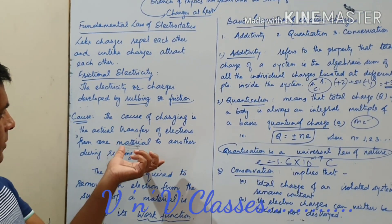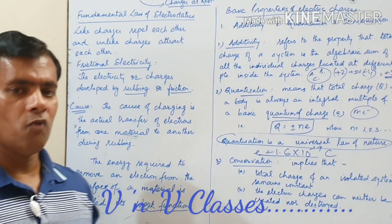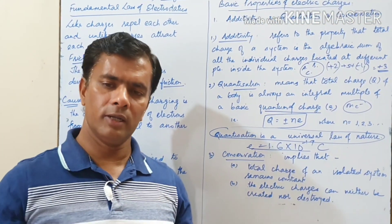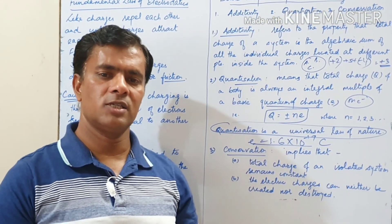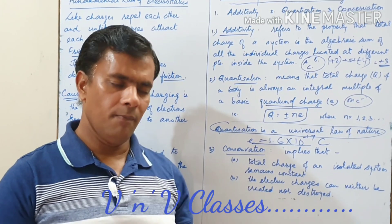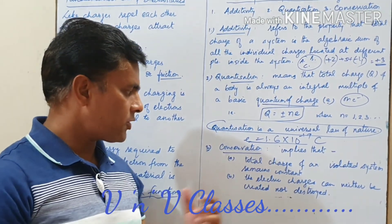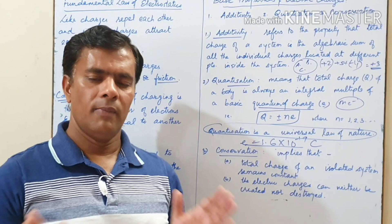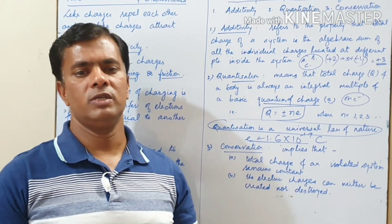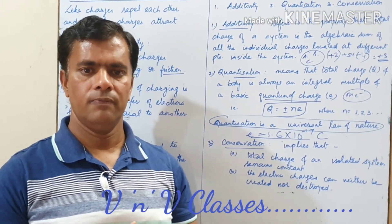We just came to know through the rubbing we can transfer the charge from one body to another. Further we will discuss in the next video about the process of induction. But basically here the conservation refers to any method but the total charge on the two bodies will always remain constant. Thank you.